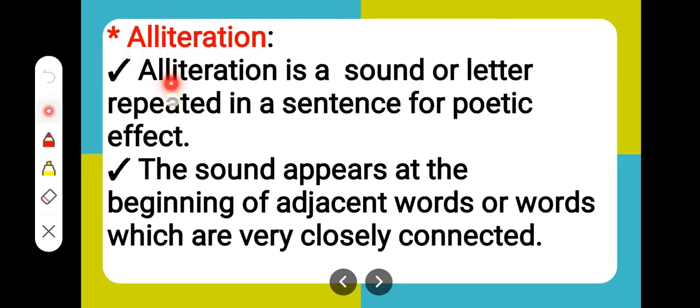Alliteration: Alliteration is a sound or a letter repeated in a sentence for poetic effect. The sound appears at the beginning of adjacent words or words which are very closely connected.